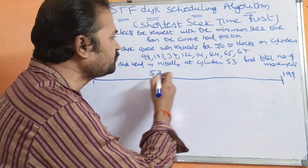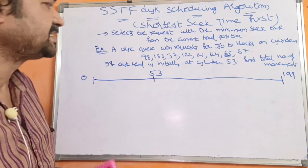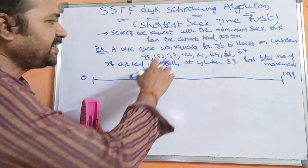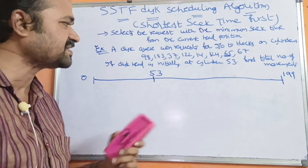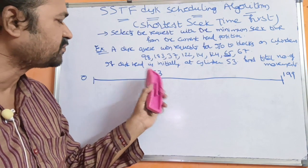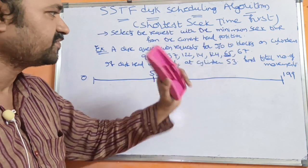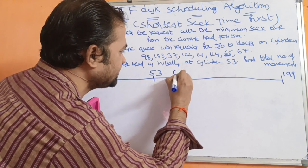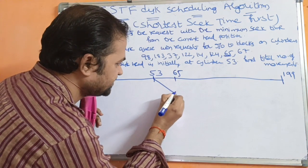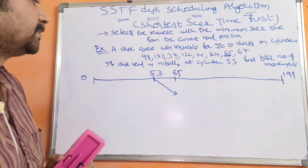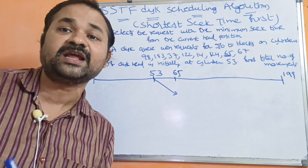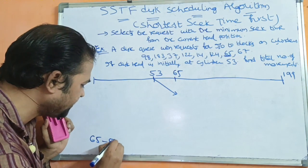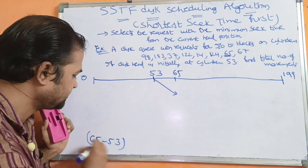The nearest value to 53 is 65, because the difference between 65 and 53 is 12, whereas the difference between 53 and 37 is 16. So the next cylinder to be processed is 65. The head movement for this step is 65 minus 53.